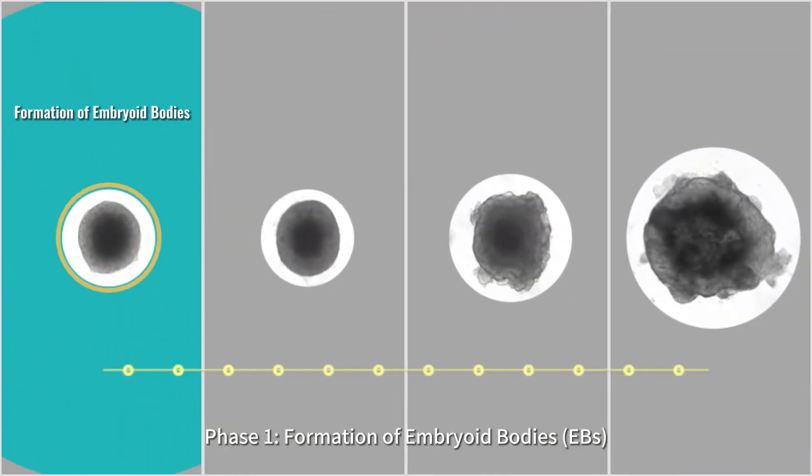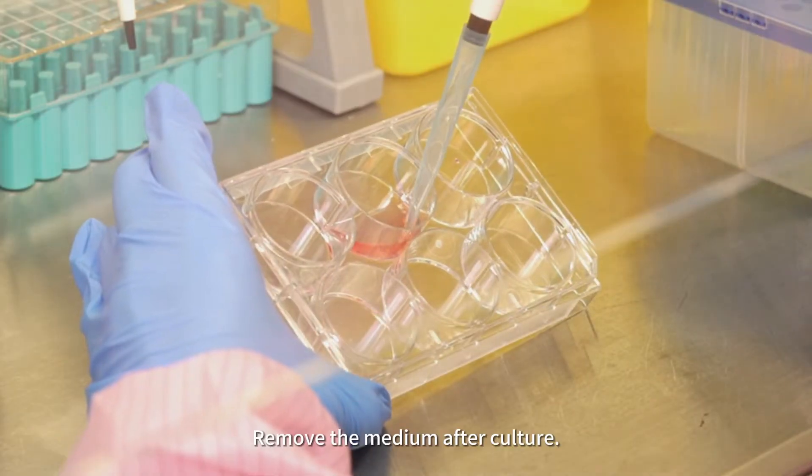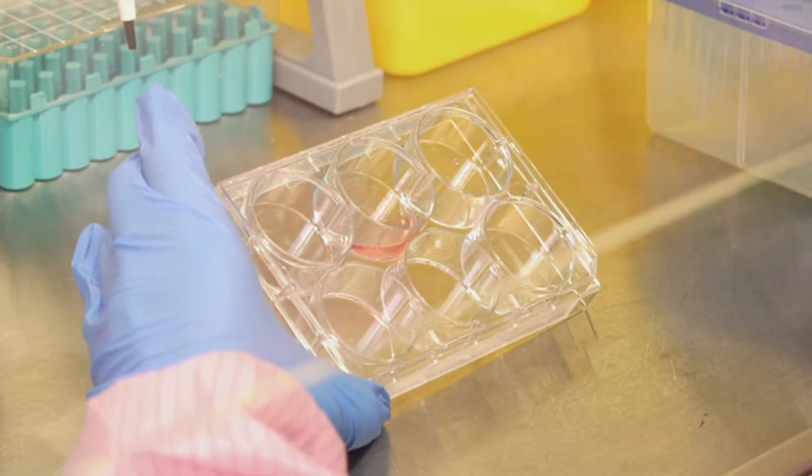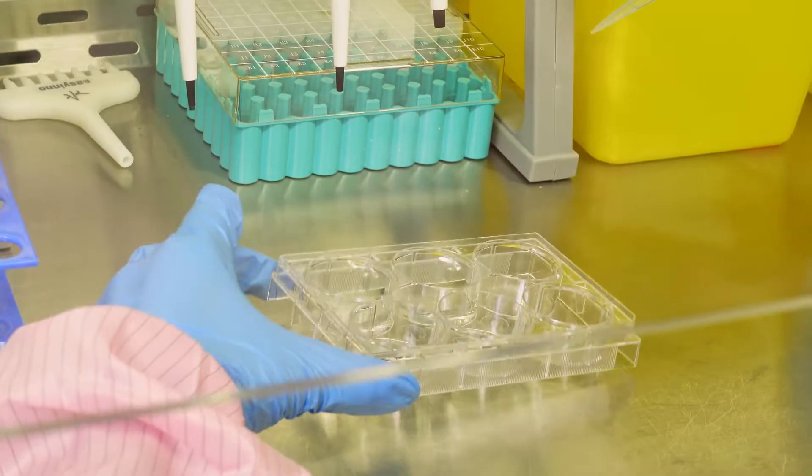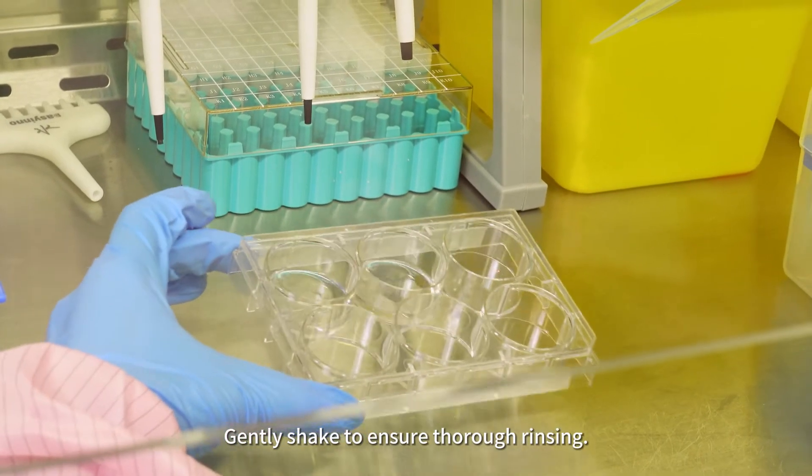Phase 1, Formation of Embryoid Bodies. Remove the medium after culture. Pre-rinse the human pluripotent stem cells with PBS. Gently shake to ensure thorough rinsing.